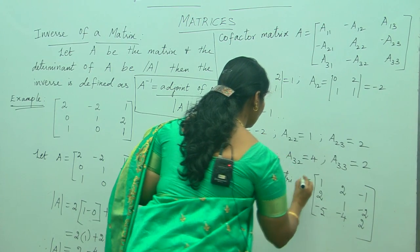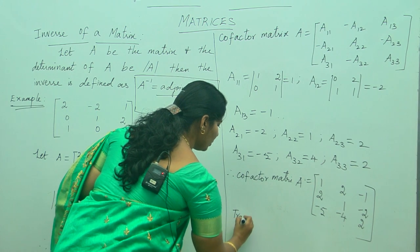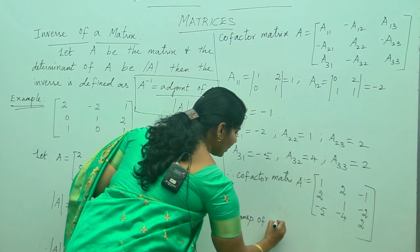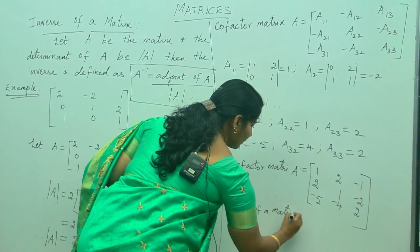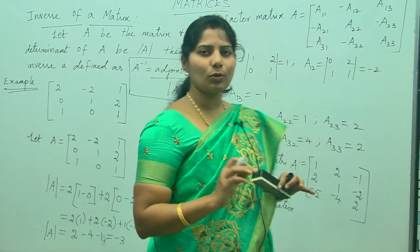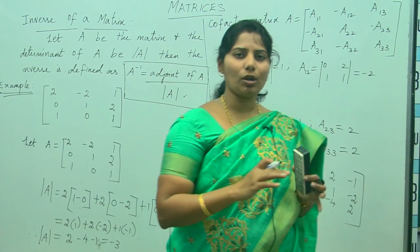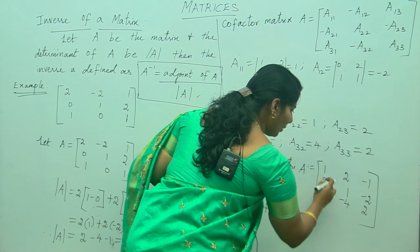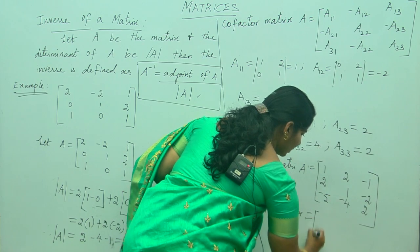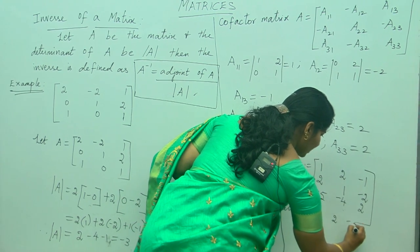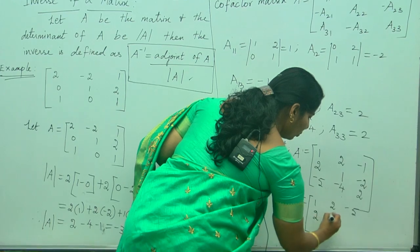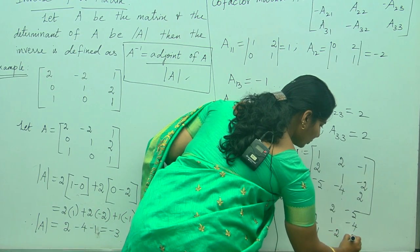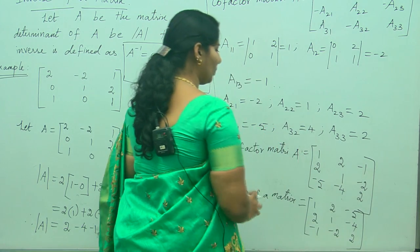Now we need to find the transpose. The transpose of a matrix is obtained by interchanging the rows and columns. So writing the columns as rows, the transpose of the cofactor matrix — which is the adjoint of A — is: 1, 2, minus 5; 2, 1, minus 4; minus 1, minus 2, 2.